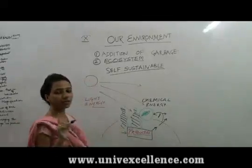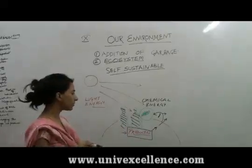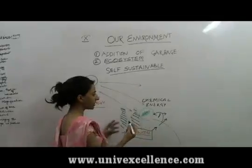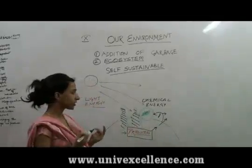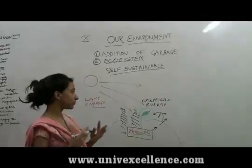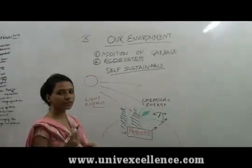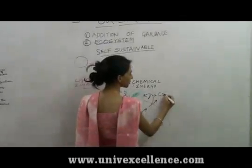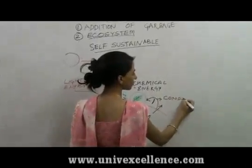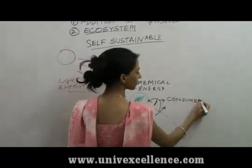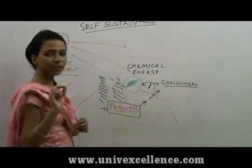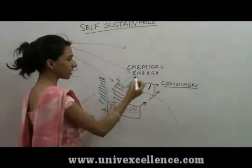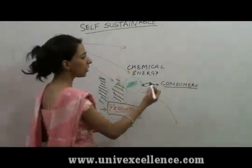That's why plants are known as producers, and producers are one component of the ecosystem. Producers form various foodstuffs like glucose and other food molecules, which are consumed by consumers. The animals that directly feed on green plants are known as primary consumers.